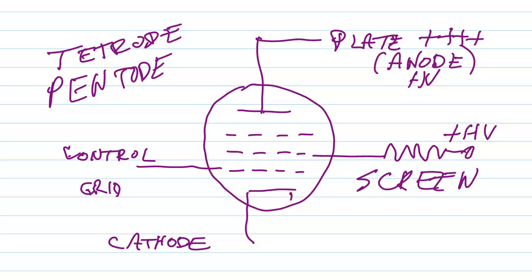Oftentimes the screen grid will also have a capacitor, a so-called bypass capacitor that goes to ground to increase still more the isolation between the control grid and the plate.